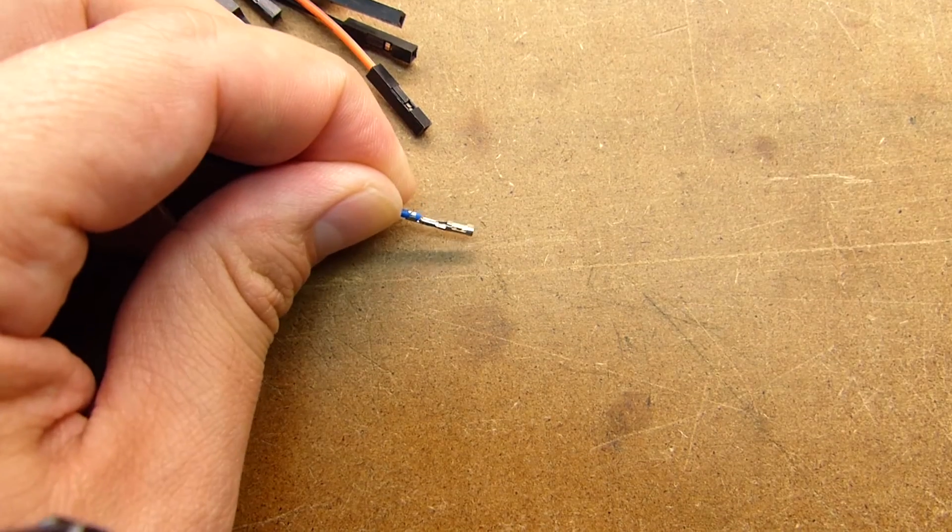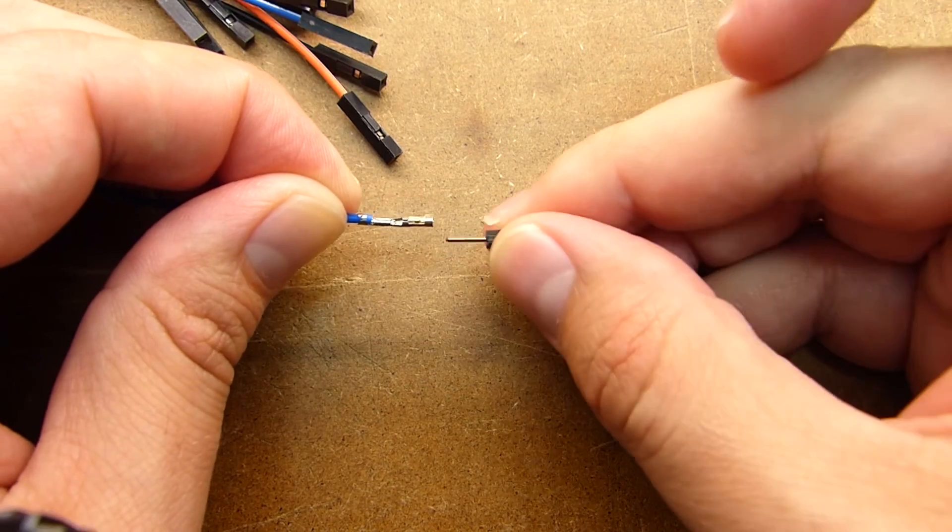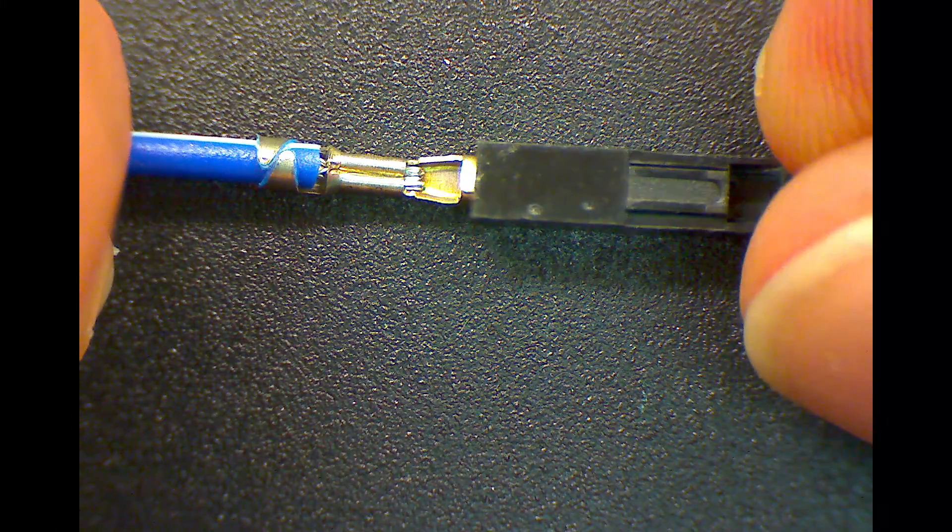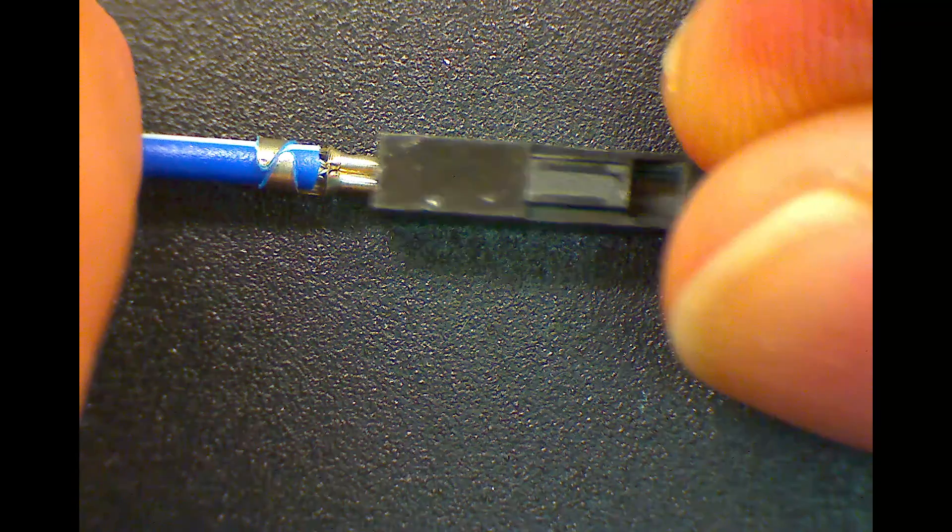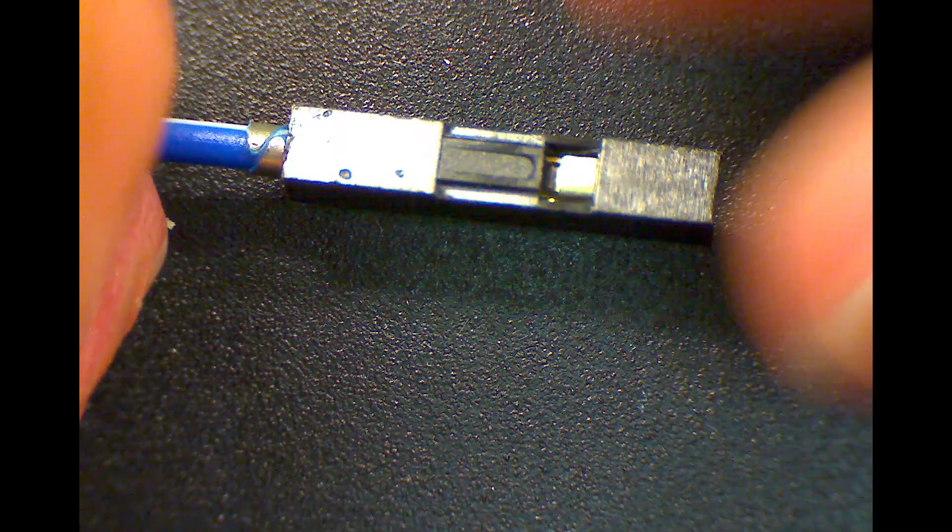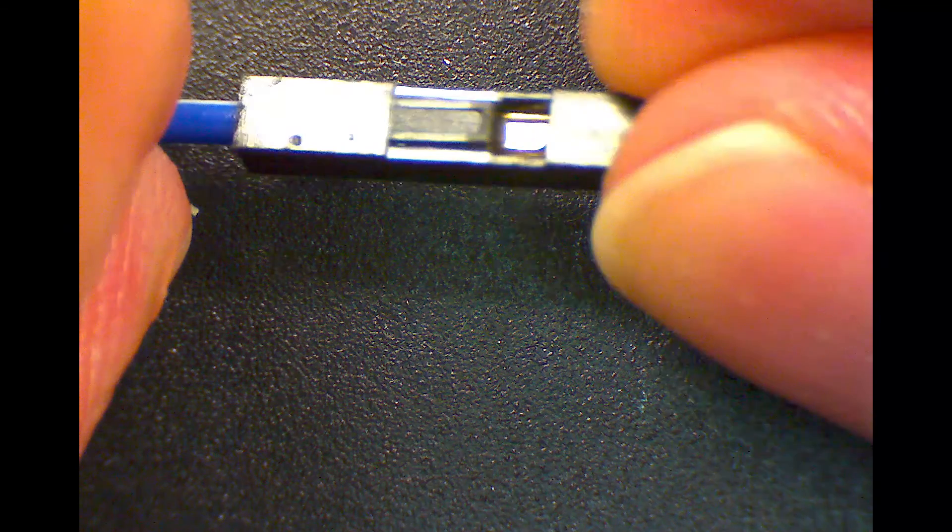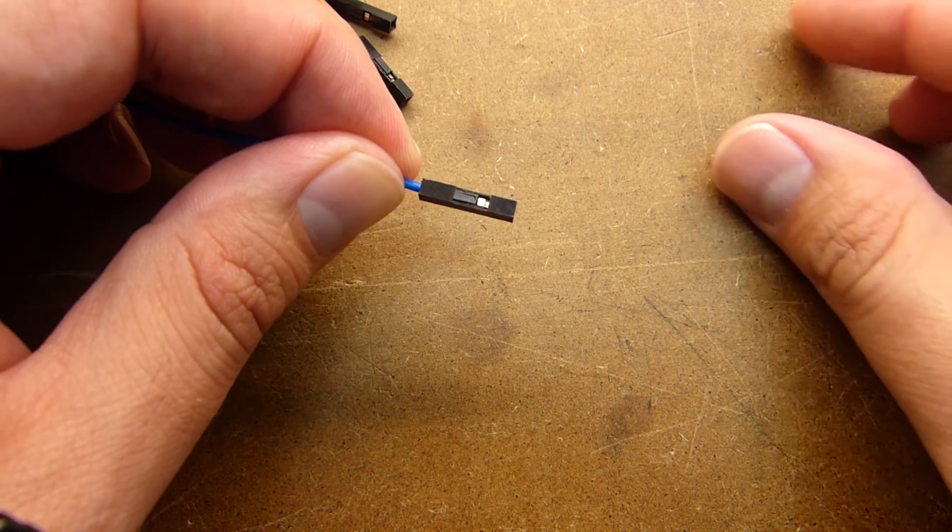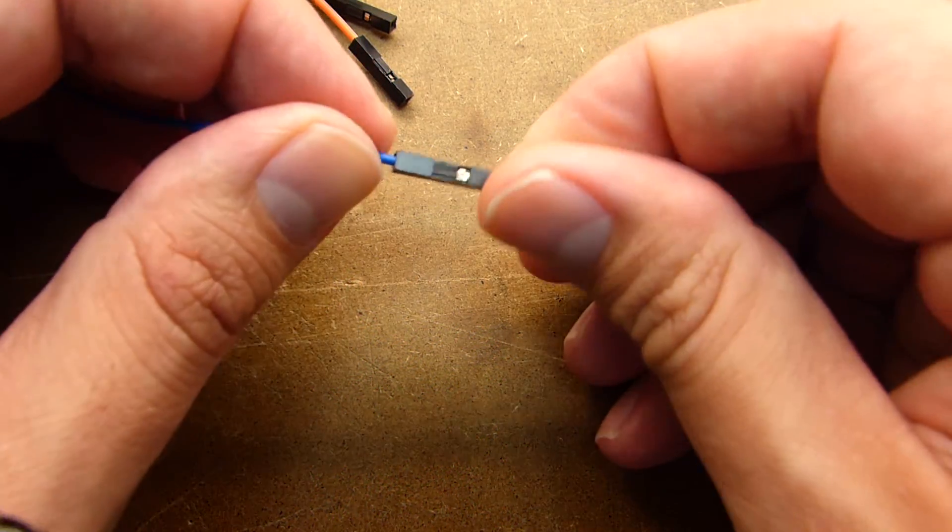So once you've got those bent down and you've tested it with a male header pin and it holds it fine, then you can go ahead and slide it back into the nylon housing. Just make sure that the top part that we've been working on lines up with the window and the tab on the connector, in case you forget. It should only go one way, but that's just an easy rule of thumb to remember. Once you've got the housing slid on, you can go ahead and test it again.